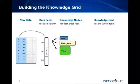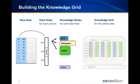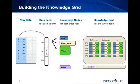A fourth knowledge node, called pack2pack, is built when a query joining two or more tables is run. The Knowledge Grid is then built from these knowledge nodes during the load process.